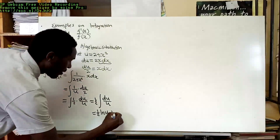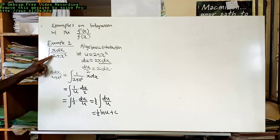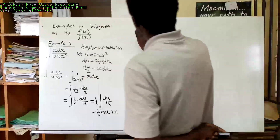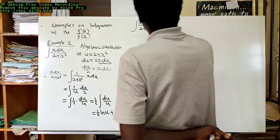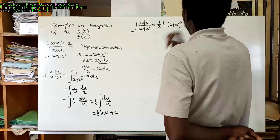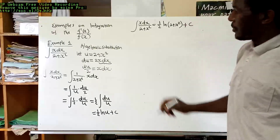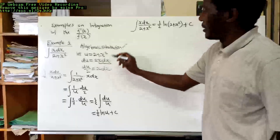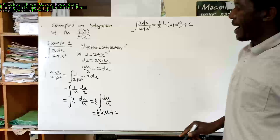Integration of du divided by u gives us the natural logarithm, so we have one-half natural logarithm of u. Since this is an indefinite integral, we add a constant of integration. We then back-substitute u with 2 plus x squared, giving the final answer: the integral of x dx divided by (2 plus x squared) equals one-half ln(2 plus x squared) plus C. Since 2 plus x squared is an algebraic expression, we call this process algebraic substitution.